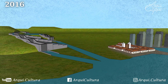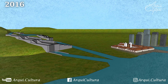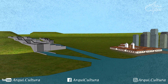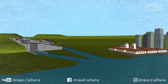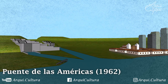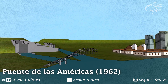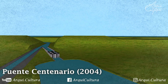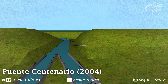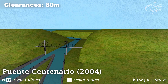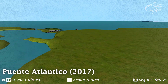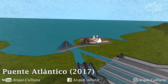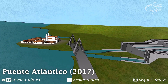Something not directly part of the canal but equally important is the bridges that cross it, as their clearances — meaning the height between the water and the bridge — determine the maximum height of vessels that can pass through. On the Pacific side, the oldest bridge is the Bridge of the Americas from 1962, named for connecting the two halves of America separated by the canal, with a clearance of 61 meters. Near it is the Centennial Bridge, built in 2004 to commemorate the 100 years of the Republic of Panama, with a clearance of 80 meters. At the Atlantic end, we have the Atlantic Bridge from 2017, built to replace one dating back to 1942 which was dismantled in 2018, with a clearance of 75 meters.